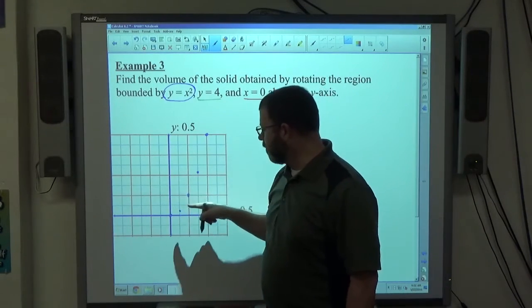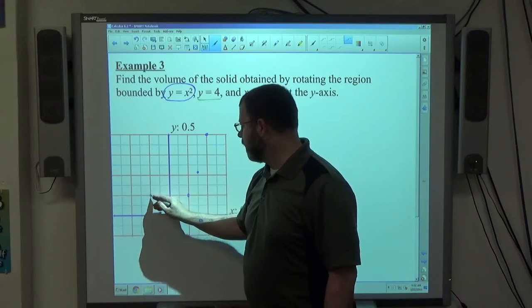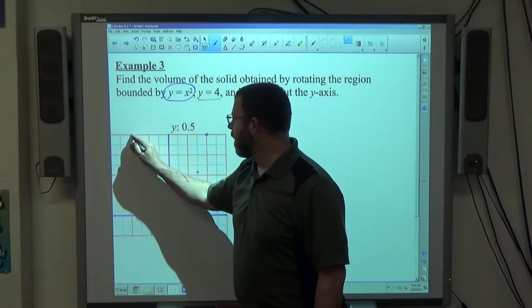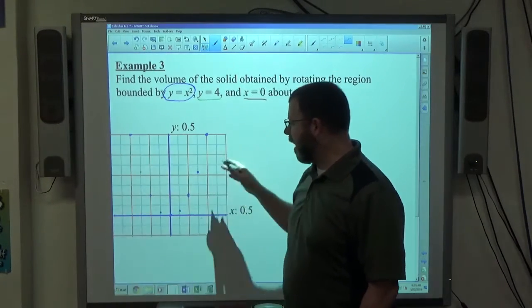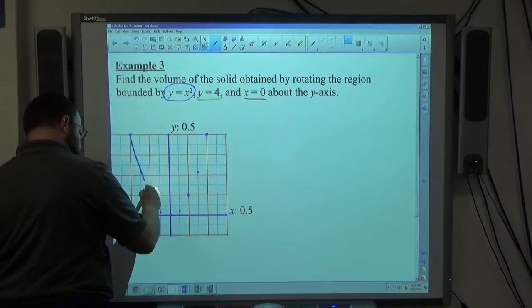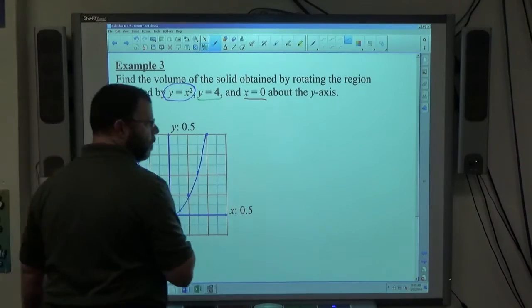I'll go in the other direction. Negative 0.5 squared is 0.25, negative 1 squared is 1, negative 1.5 squared is 2.25, negative 2 squared is positive 4. So if I were just to graph that, it looks like this. That's y equals x squared.